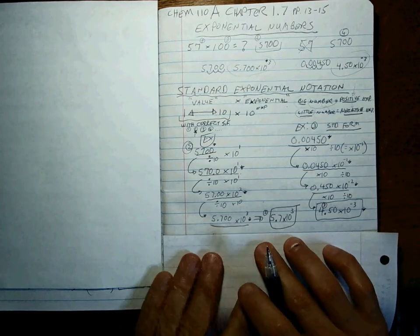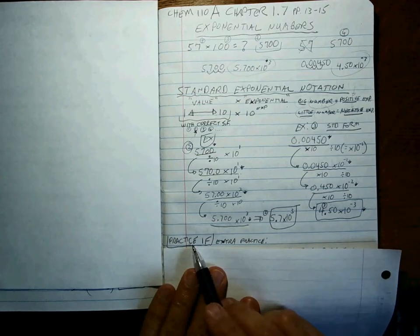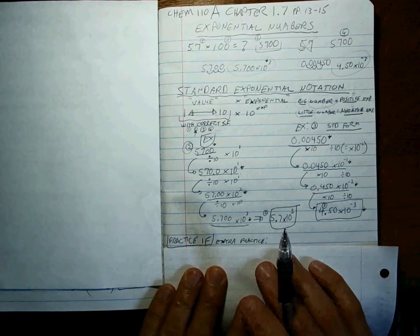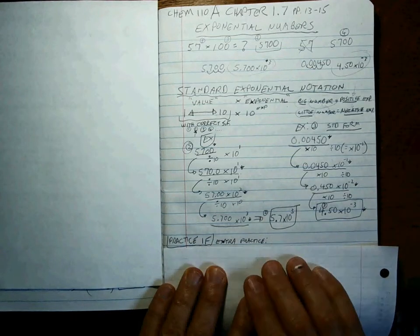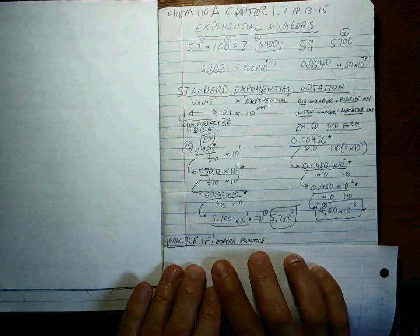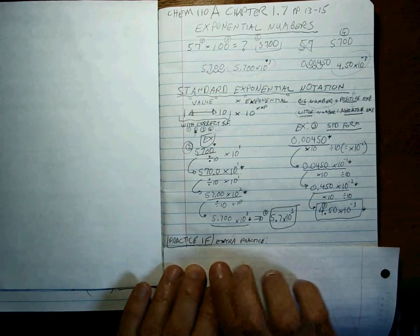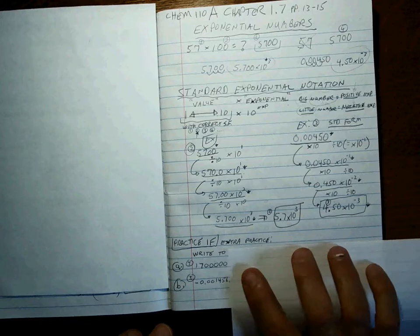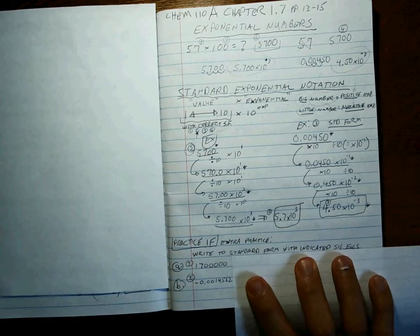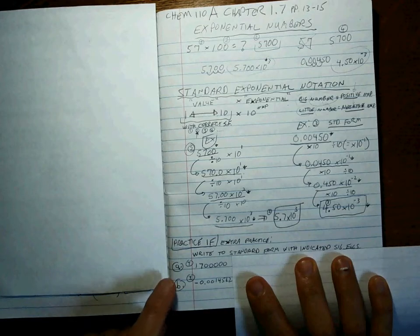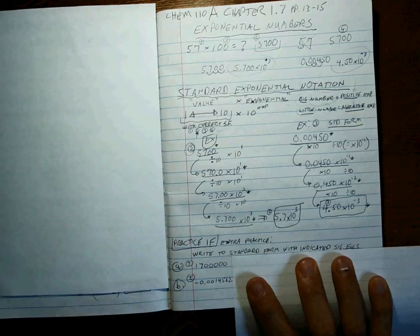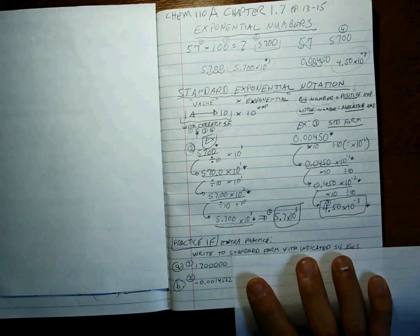Let's give you some examples. The first place you go is to do as many problems from practice exercises 1f as you can. Write to standard form with the indicated significant figures. For A: 1.7 million with 4 sig figs. And B is negative 0.0014562 with 3 sig figs. Give it your best shot after hitting pause, and then we'll give you the right answers so you can check your work. Hit pause.